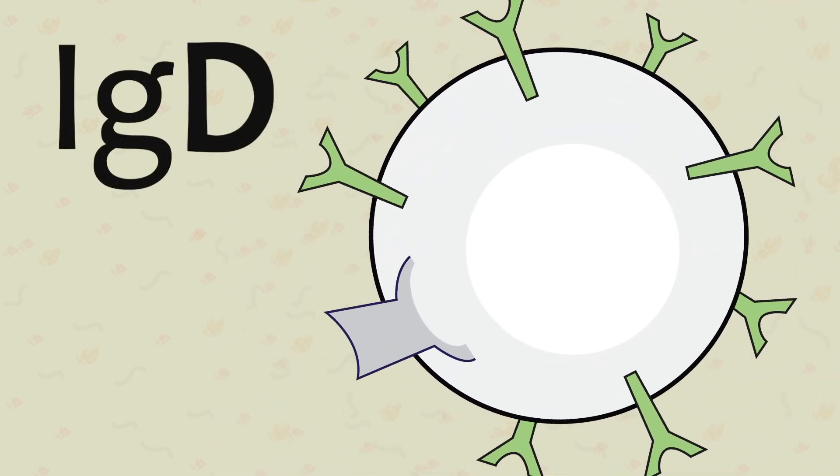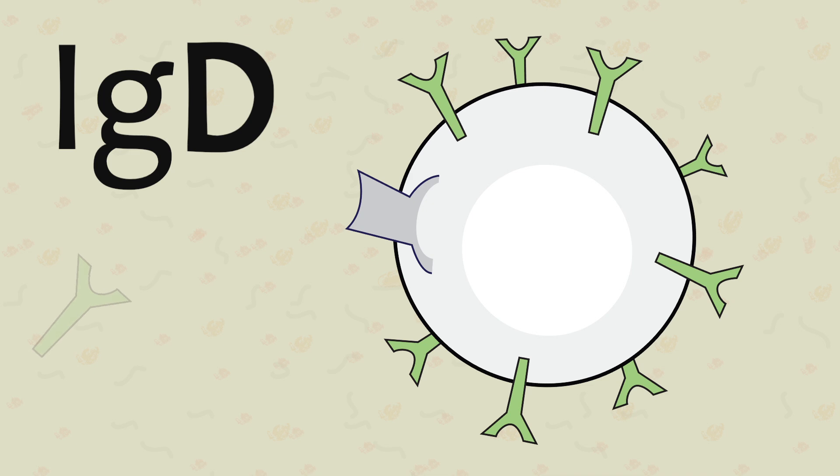IgD's are primarily found on the surface membrane of B cells, but account for a very tiny portion of the free-floating antibodies found in the plasma.